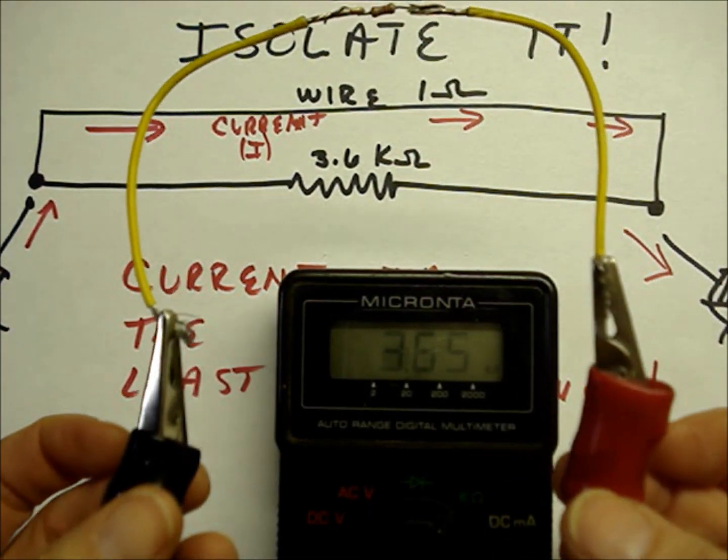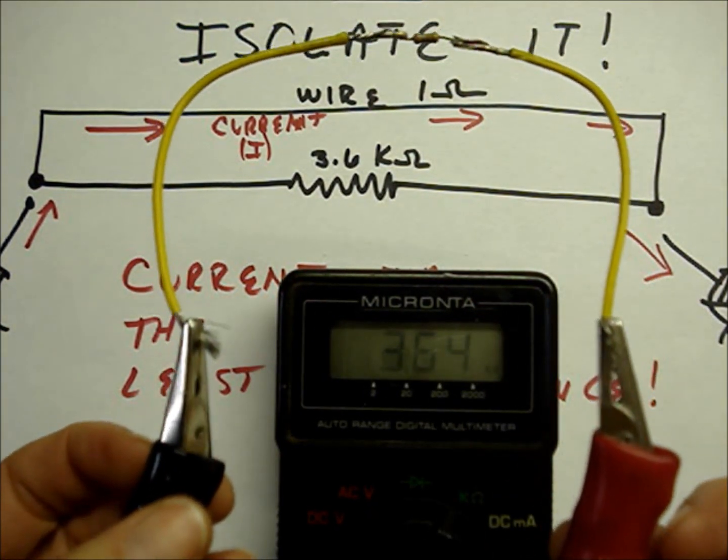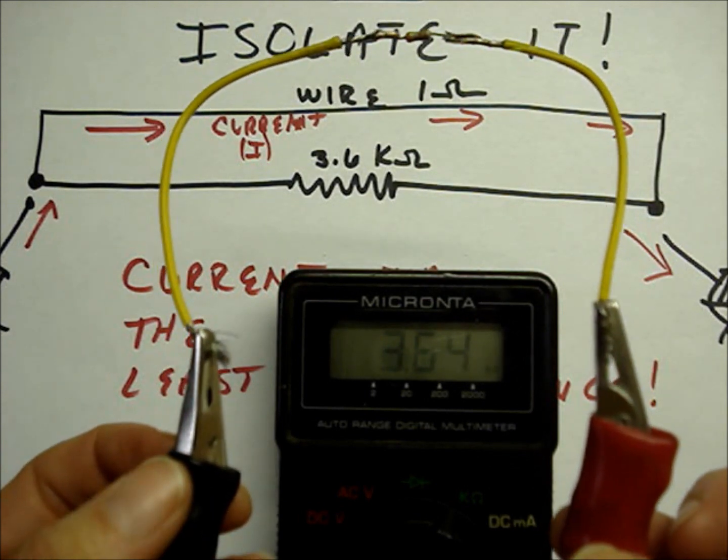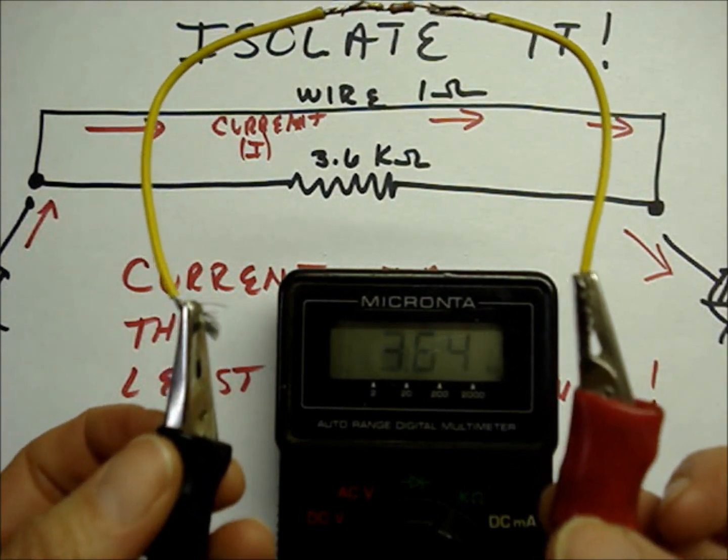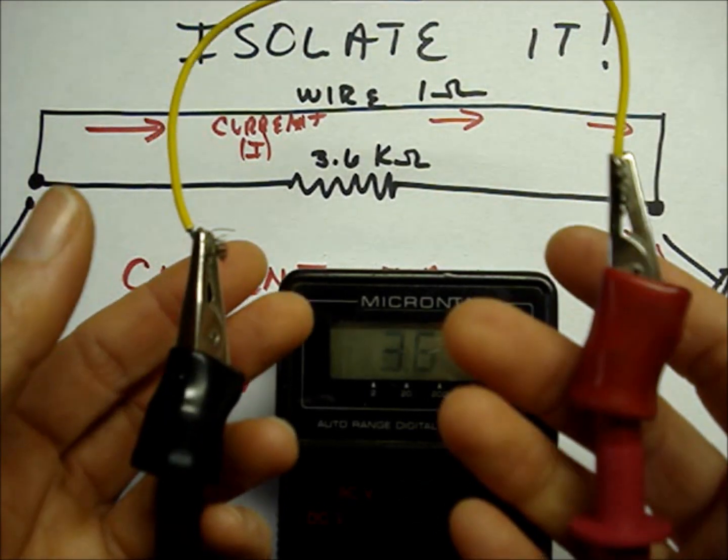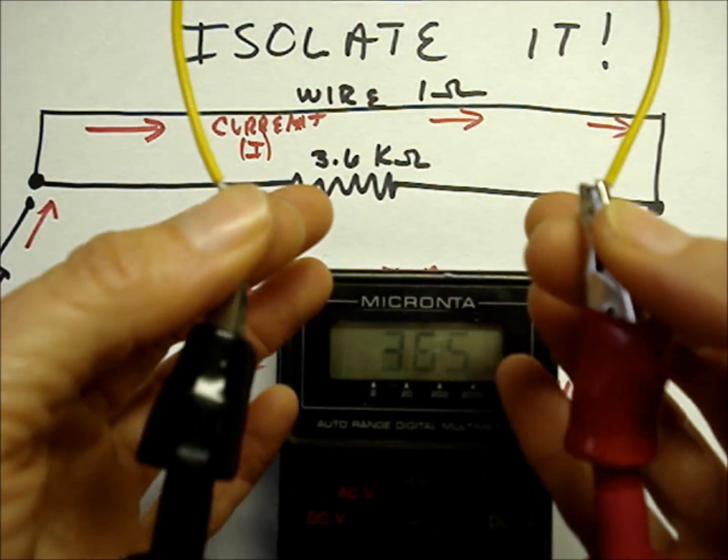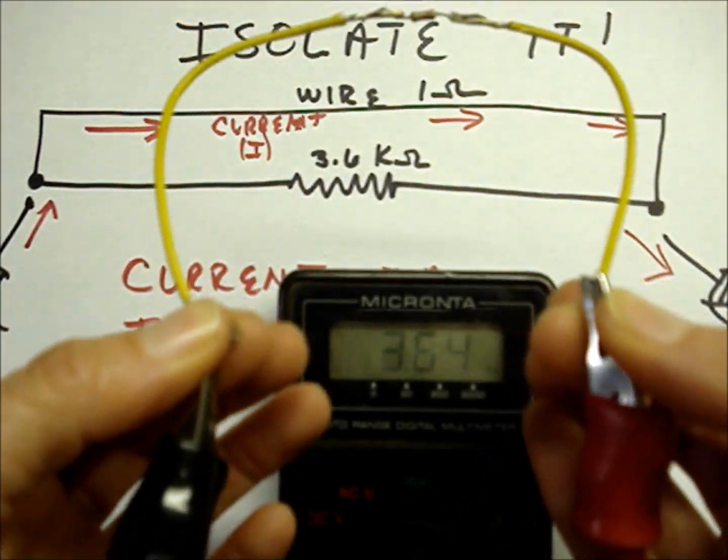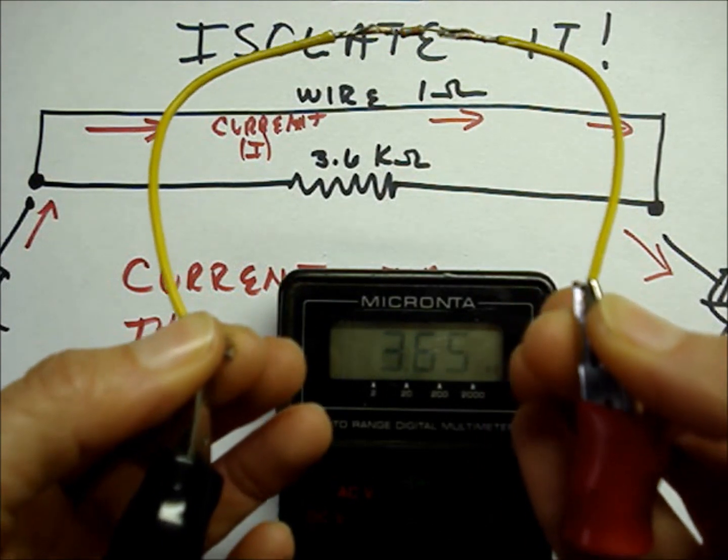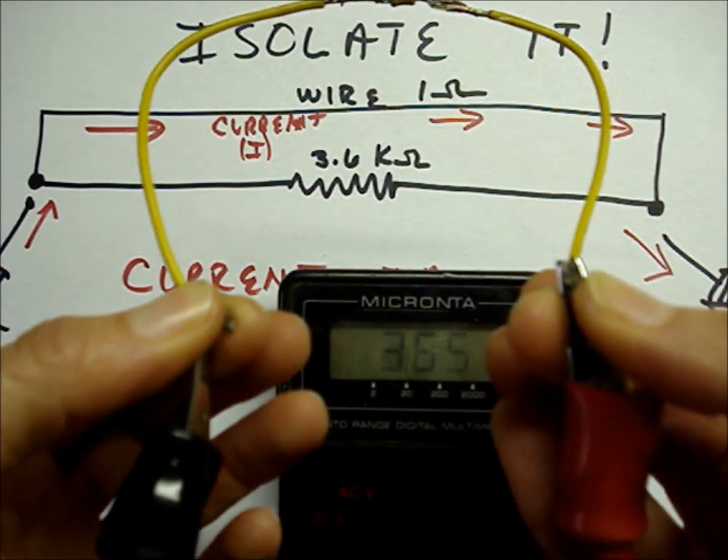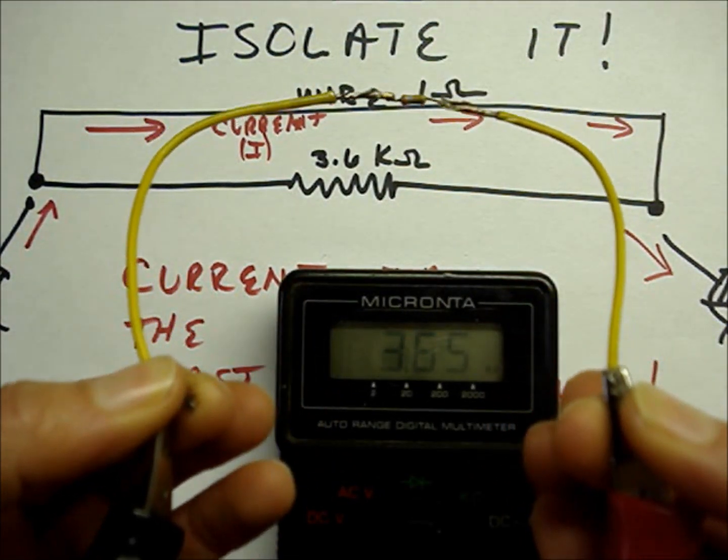I have the meter leads clamped onto the 3.6 kohm resistor. And you can see we read 3.6 kohms. And if I touch my hands across the either meter lead, if you remember, I read in the megaohm scale when I read through my body.